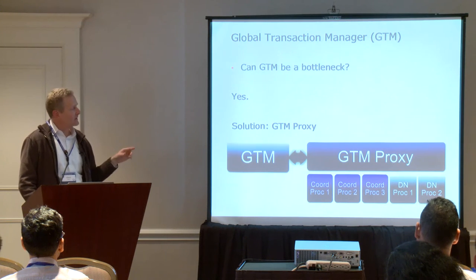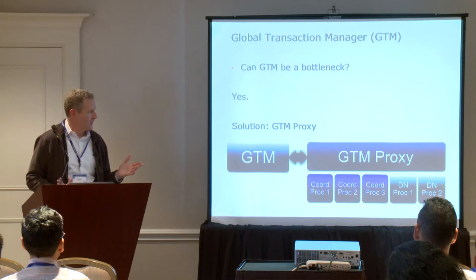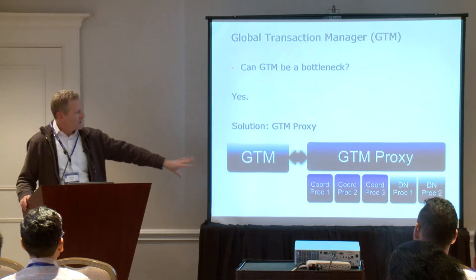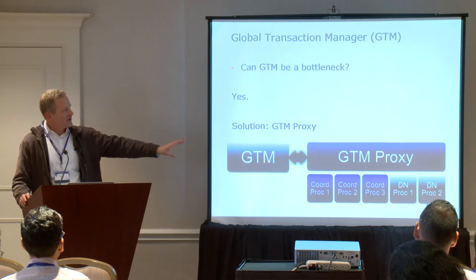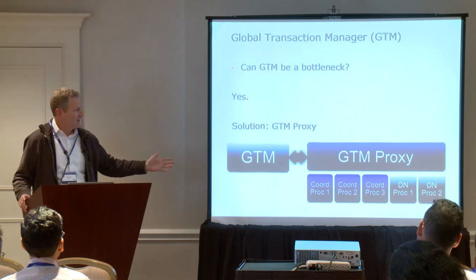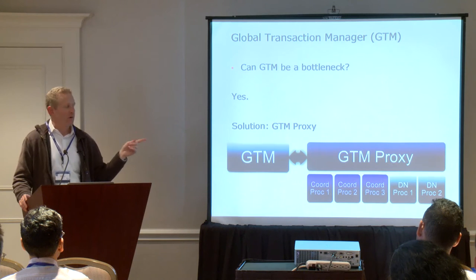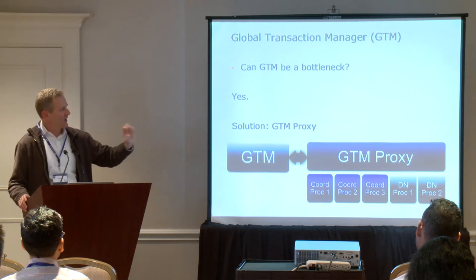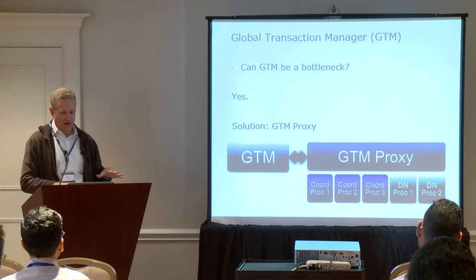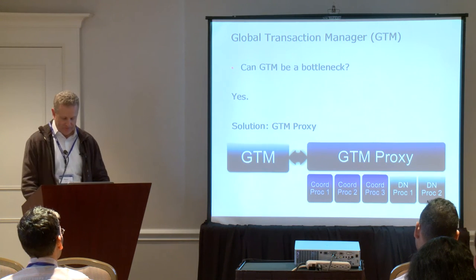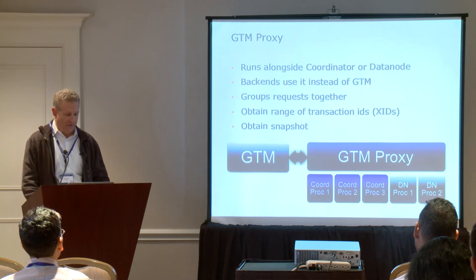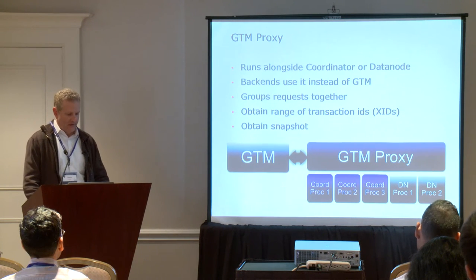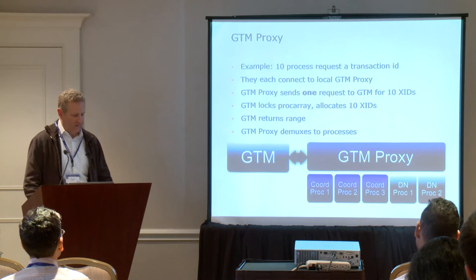Another concern is it seems like GTM could also be a bottleneck, since every single transaction statement has to interact with the GTM. To get around that problem, we have another entity called the GTM proxy. Say you have a couple hundred connections to a coordinator and 10 simultaneously send BEGIN TRANSACTION — instead of talking directly to the GTM, they'll talk to the proxy. It'll group those together, send one request across the network, grab a chunk of 10 transaction IDs at once, and send them back. This cuts down on network activity and reduces locking of that critical section of code.